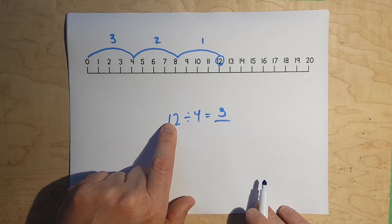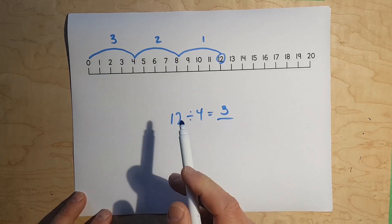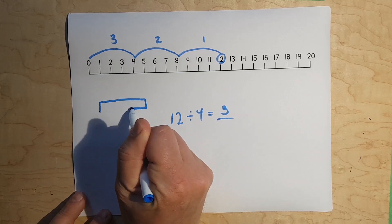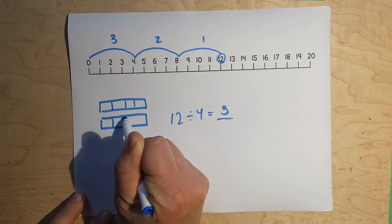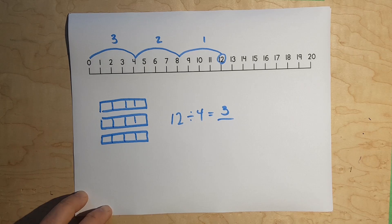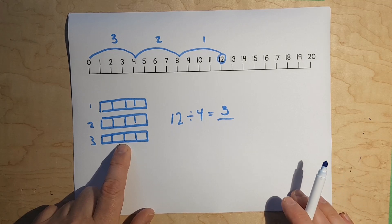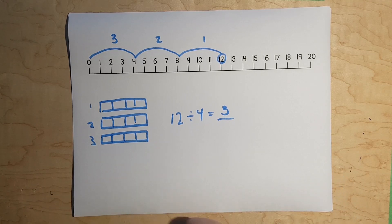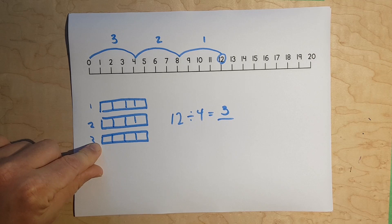Or 3 times 4 equals 12. Now, let's draw this in groups again. We've got 3 groups of 4. 3 groups of 4 equals 12. It's like if you had friends come over — there were 3 of you and your mom gave you 12 brownies cut into 12 pieces. How would you divide that? You would each get 4 pieces.